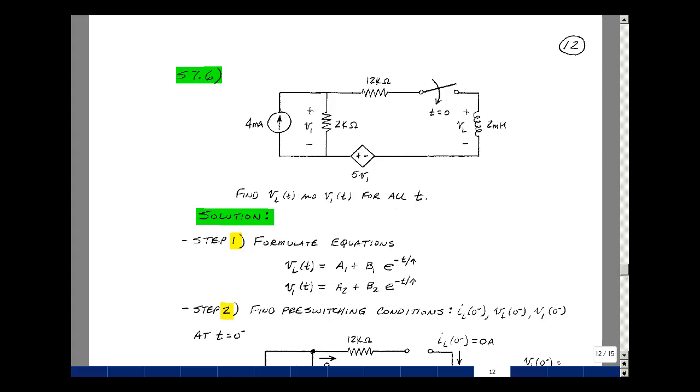The first one is to formulate the equations. I still have a first order differential equation, so the form of any voltage or any current is a plus b times e to the minus t over tau. Now since I have two variables here, let's use a one and two subscript.